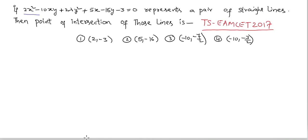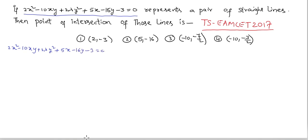If 2x² - 10xy + 2λy² + 5x - 16y - 3 = 0 represents a pair of straight lines, then the point of intersection of these lines is given. Here the equation is 2x² - 10xy + 2λy² + 5x - 16y - 3 = 0.